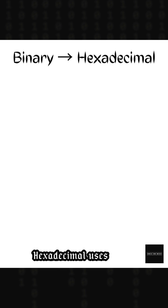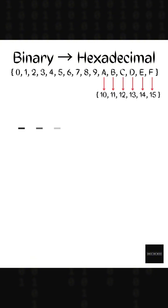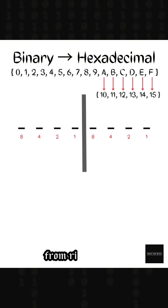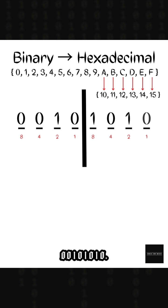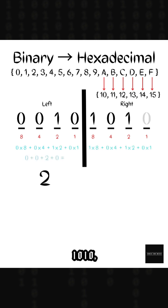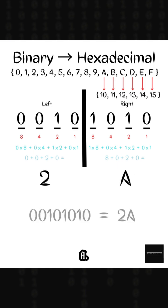Binary to hexadecimal. Hexadecimal uses digits 0 to 9 and letters A to F. Group binary digits into 4 bits from right to left. Example: 0, 0, 1, 0, 1, 0, 1, 0. Left group: 0, 0, 1, 0 equals 2. Right group: 1, 0, 1, 0 equals 10, which is A. Combine them: 2A in hex.